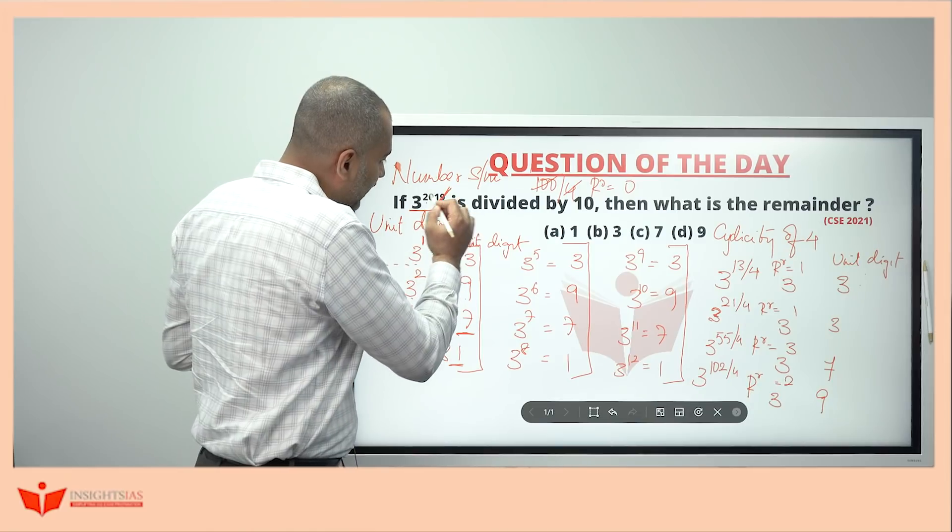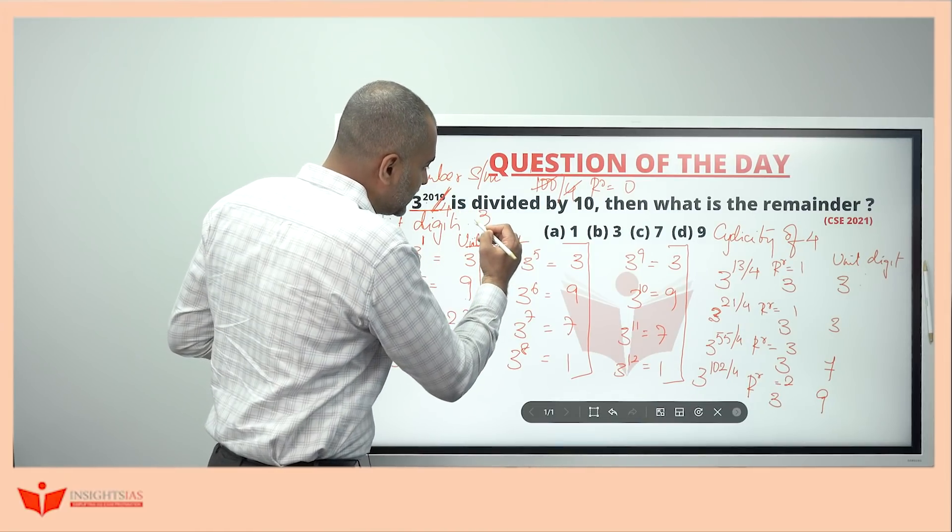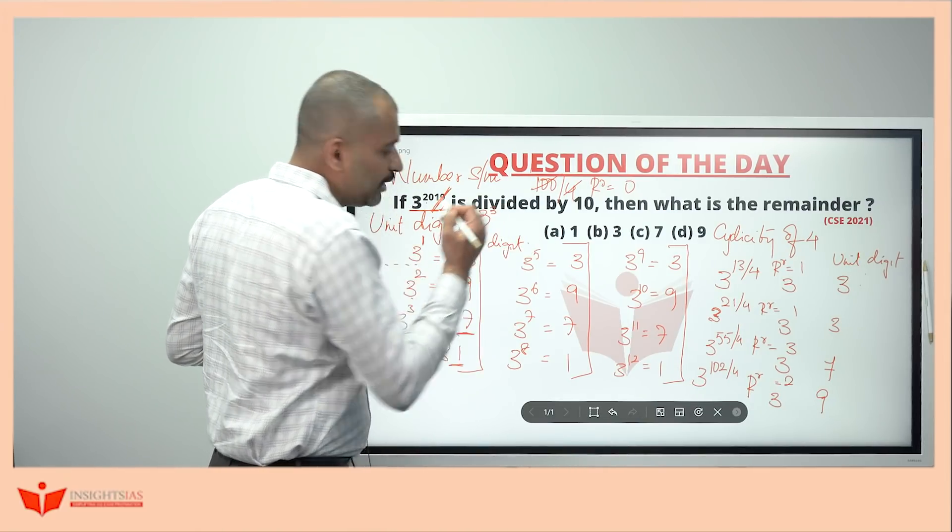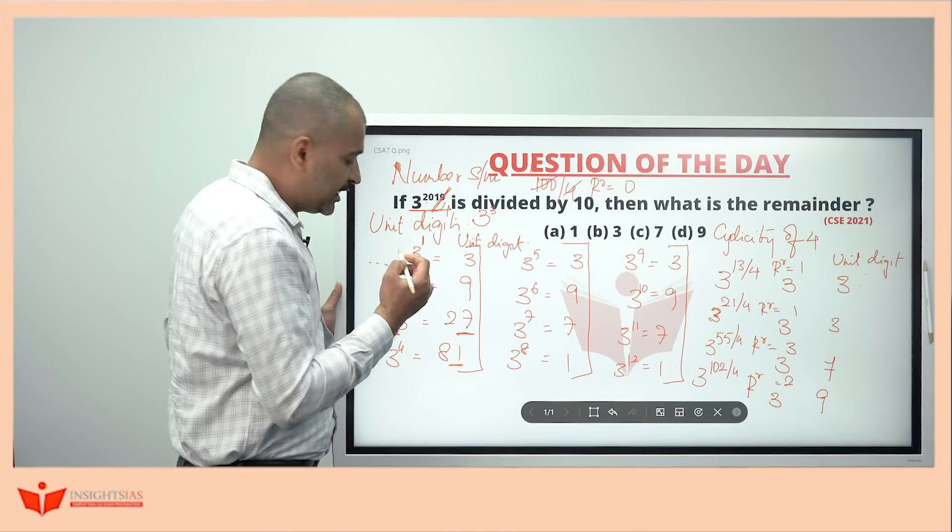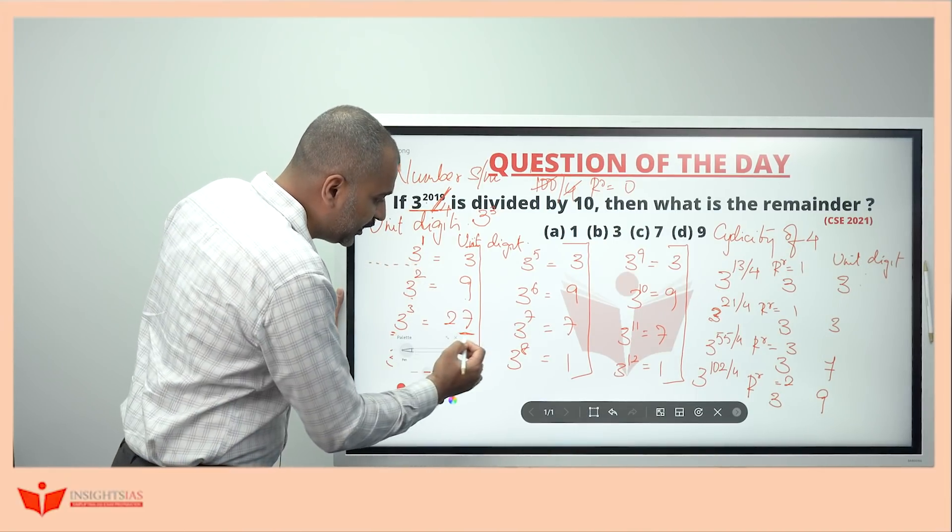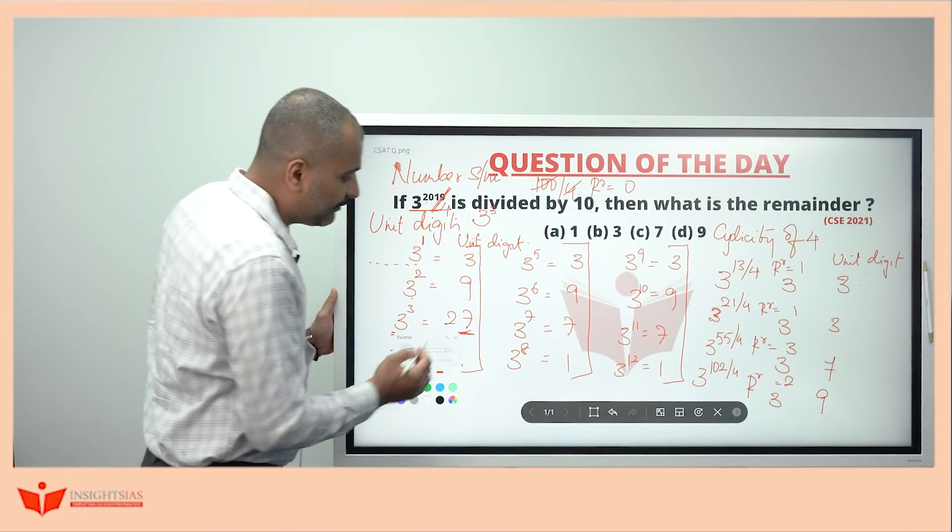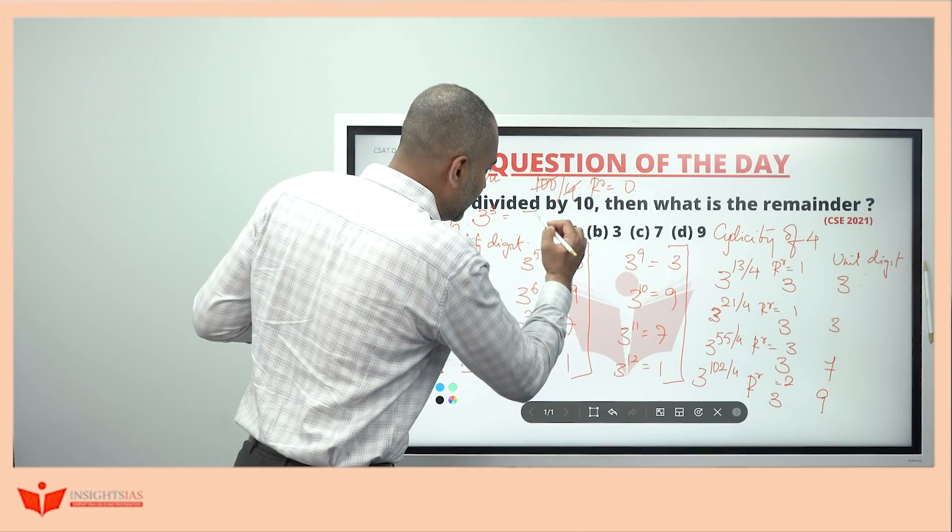So, when I divide 2019 by 4, the whole thing's remainder is 3 power 3. I will be getting 3 power 3. See, when you get 3 power 3, what is the unit digit you are getting here? 7. The unit digit is 7.